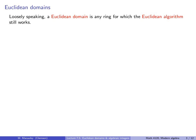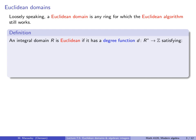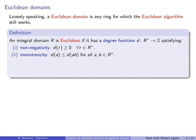Let's return to modern day and see how this fits into the more general framework of rings. We will define something called a Euclidean domain, which loosely speaking is any ring for which the Euclidean algorithm still works. An integral domain R is Euclidean if it has a degree function D from the non-zero elements of the ring to the integers, satisfying the following properties. Non-negativity: the degree of every element is at least 0. Monotonicity: the degree of A is less than or equal to the degree of A times B for all elements — as you multiply by elements, you can never decrease the degree.